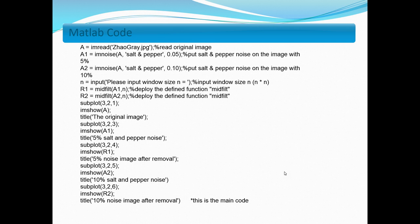This function is named media filter and the file is attached as media_filter.m. In the code, I read the picture jjaogrey.jpg — the original grayscale picture. I added two different percent salt and pepper noises to the image, 5% and 10%, then deployed the function I defined. N can also be input by the user.